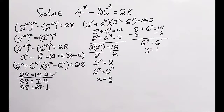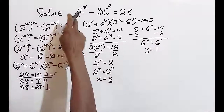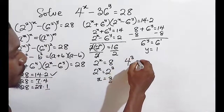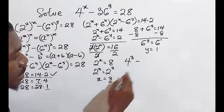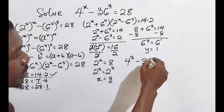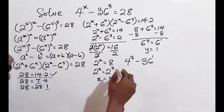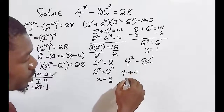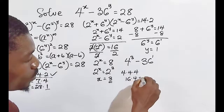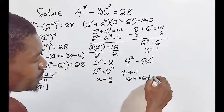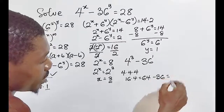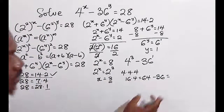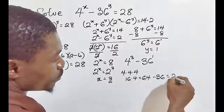Let us verify: 4 raised to the power of 3, minus 36 raised to the power of 1. We have 4 × 4 × 4 = 16 × 4 = 64, then 64 − 36 = 28. The answer checks out.